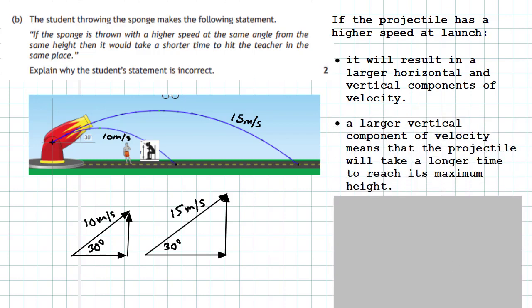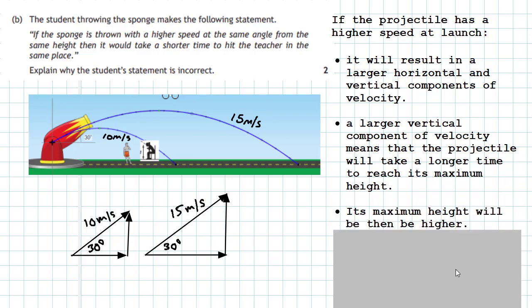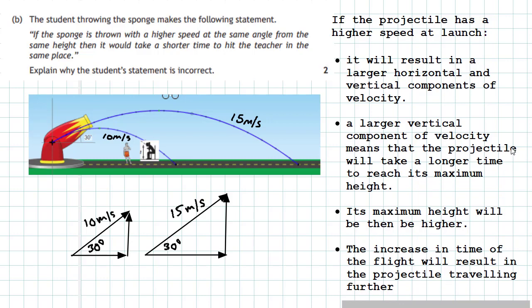A larger vertical component of velocity means the projectile takes a longer time to reach its maximum height, because acceleration needs longer to reduce the initial velocity to zero - and at maximum height the velocity is zero. The maximum height will then be higher. The increase in overall time from a higher launch speed means the projectile travels further due to a bigger horizontal component and longer time. So if you increase the launch speed at the same angle, the sponge will sail higher over the teacher and land further away - she won't be hit.